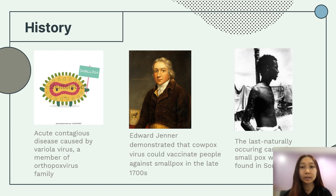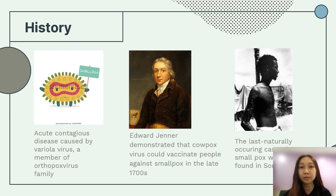Vaccinia virus eventually replaced cowpox as the viral agent used for smallpox vaccination. Although genetically distinct from cowpox, the origins of vaccinia are uncertain. The last naturally occurring case of smallpox was found in Somalia in 1977. In 1980, the World Health Organization declared smallpox eradicated, and it is the only infectious disease to achieve this distinction. This remains among the most notable and profound public health successes in history.